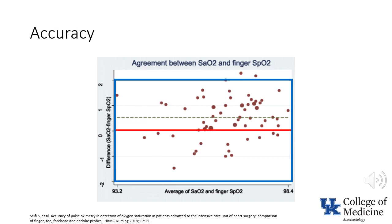The case can be made, however, that neither of these factors are likely to have an impact on patient management. With regard to the low saturations, for example, would you do something different if the patient's saturation was 50% as opposed to 70%?